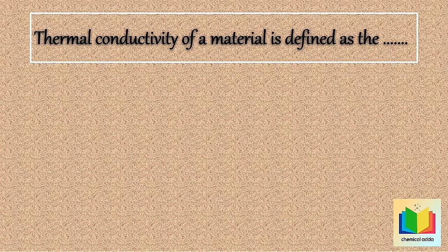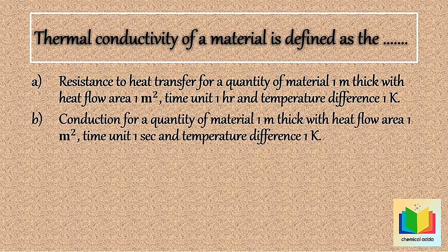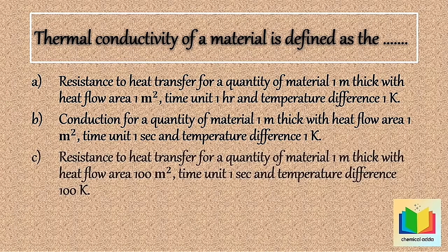Next question: Thermal conductivity of a material is defined as the. Option A: Resistance to heat transfer for a quantity of material 1 meter thick, with heat flow area 1 meter square, time unit 1 hour, and temperature difference 1 Kelvin. Option B: Conduction for a quantity of material 1 meter thick, with heat flow area 1 meter square, time unit 1 second, and temperature difference 1 Kelvin. Option D: None of these.